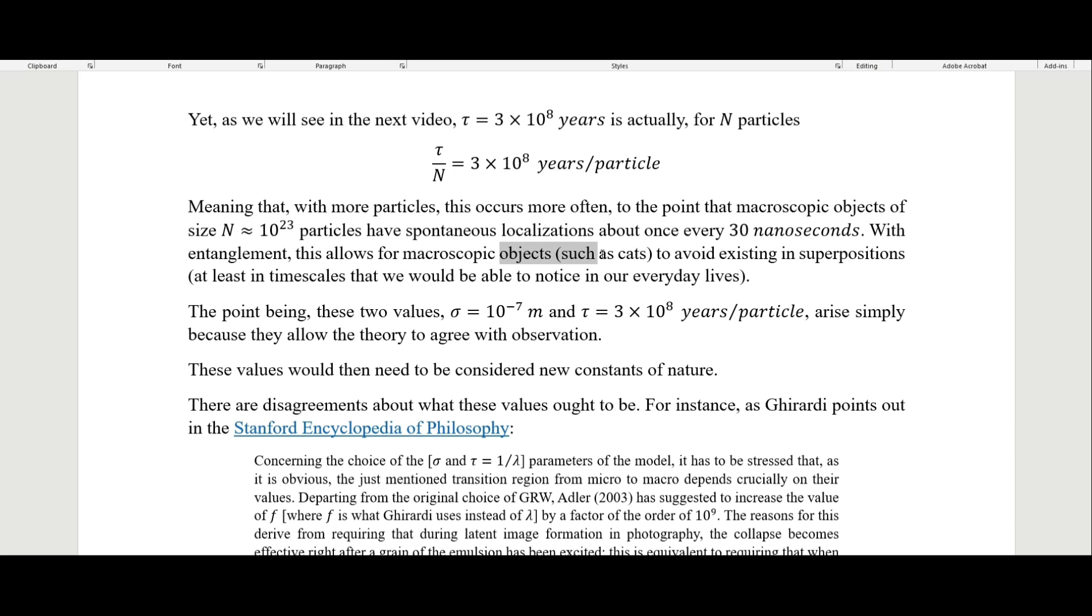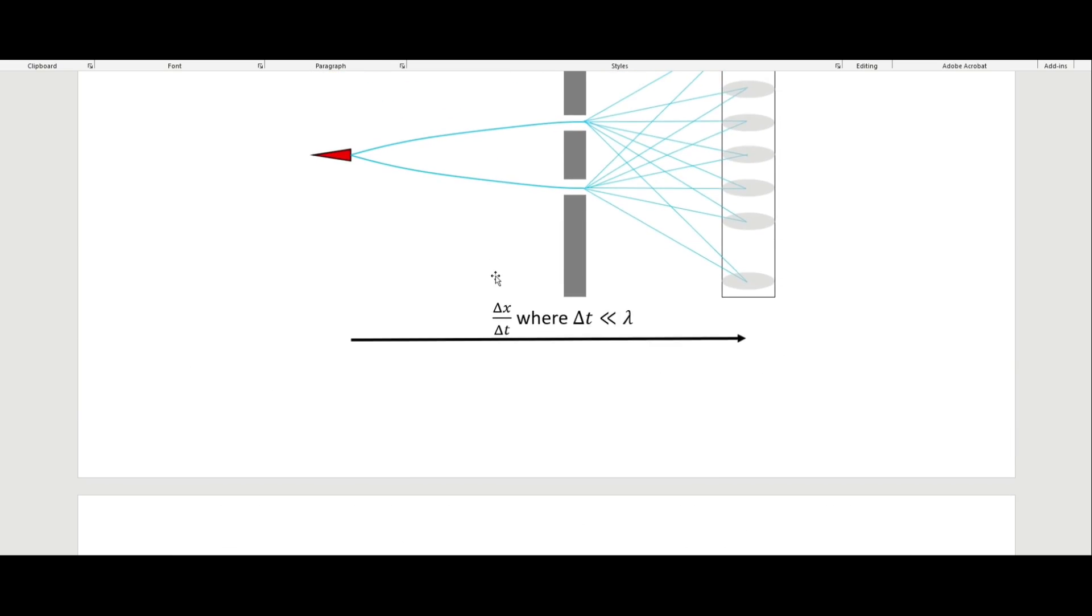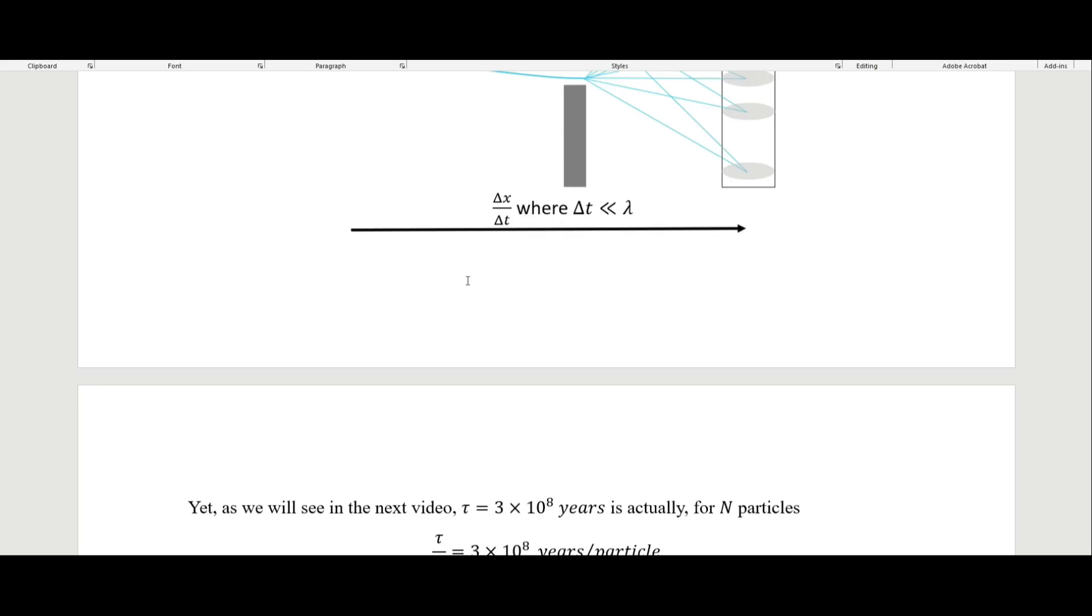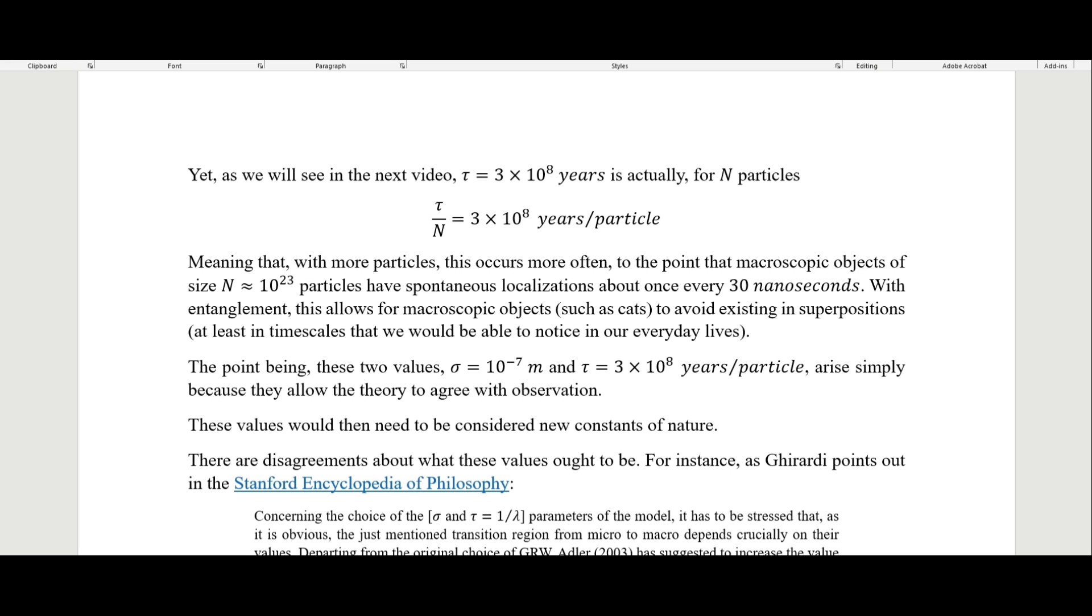With entanglement, as I'll talk about in the next video, this allows for macroscopic objects, such as cats, to avoid existing in superpositions, at least in time scales that we would be able to notice in our everyday lives. And so that's why this 300 million year time span is arrived at, because when we have these macroscopic objects we don't see these superpositions, but when we have just a single particle we do see those phenomena.